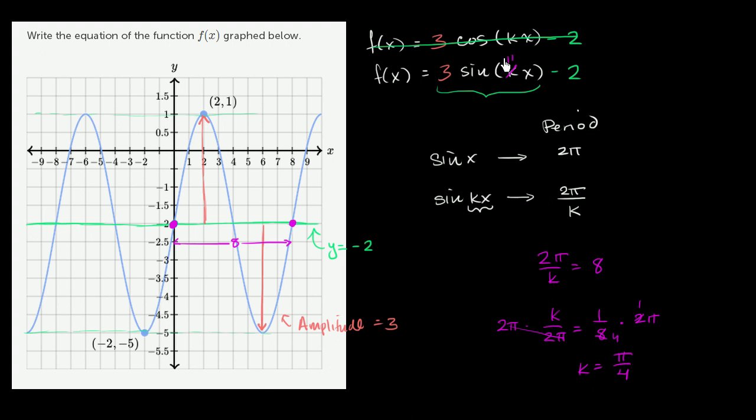And we are done. And you can verify that by trying out some of these points right over here. That this function is equal to 3 sine of π over 4x minus 2.